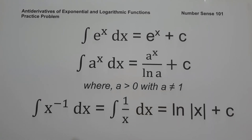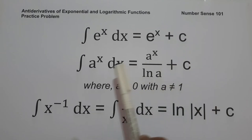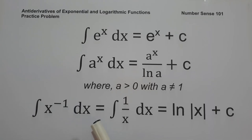In today's video, we are going to have a practice problem on how to solve the antiderivatives of exponential functions and logarithmic functions. These are the formulas you need to remember: the antiderivative of e^x dx equals e^x + c; the antiderivative of a^x dx equals a^x over ln(a) + c, where a > 0 and a ≠ 1; and the antiderivative of x^(−1) dx, same as 1/x dx, equals ln|x| + c.